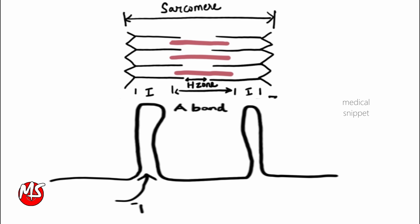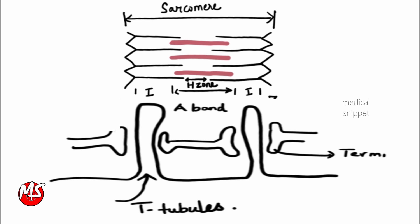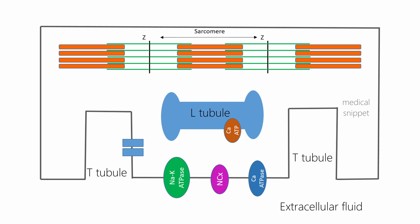The longitudinal sarcoplasmic reticulum, or L-tubule, run along the myofibrils. They do not open to exterior as T-tubules. The ends of L-tubule on either side of T-tubule are dilated to form terminal cisterns. The T-tubule contains voltage-gated calcium channels. And L-tubules also contain voltage-gated calcium channels. L-tubules also have ATP-mediated calcium pump to pump the sarcoplasmic calcium back inside L-tubule.